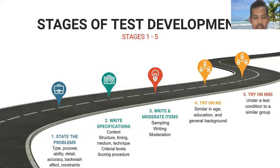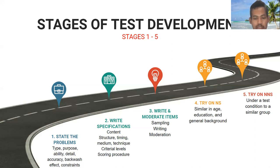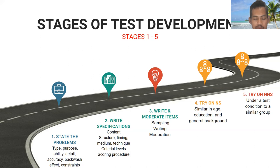After that, we go into the third stage: writing and moderating items. First, we need to sample items not only from one or two areas, but from different areas in order to have a more thorough test instrument. In writing a test, we need to be consistent. For moderation, we need to have at least two persons deciding whether each item is good enough, needs to be modified, or should be rejected — to ensure the test is reliable and good.